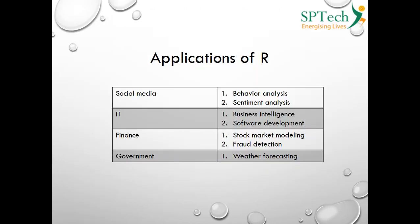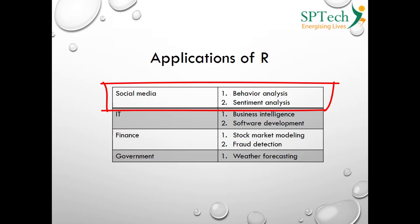Coming to the applications of R — R is predominantly used in social media. In social media there are two things: behavior analysis and sentiment analysis. In behavior analysis, you can track customer behavior on a website — which areas they visit most and which they visit least — so you can fine-tune content and improve user experience.